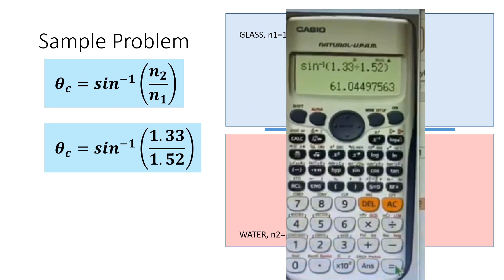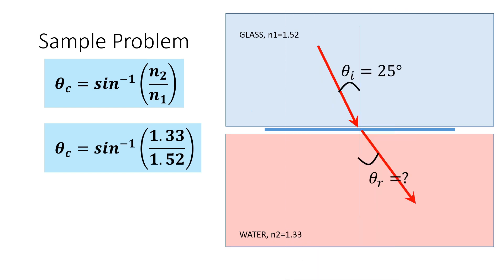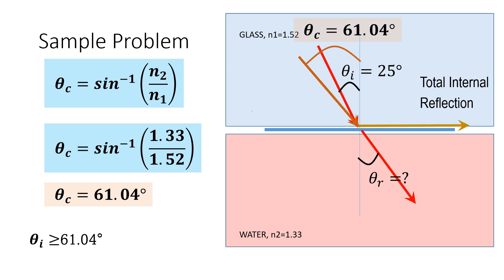Plugging in the values, we arrived at the critical angle equal to 61.04 degrees. This means that the total internal reflection will occur at an angle of incidence greater than or equal to 61.04 degrees.